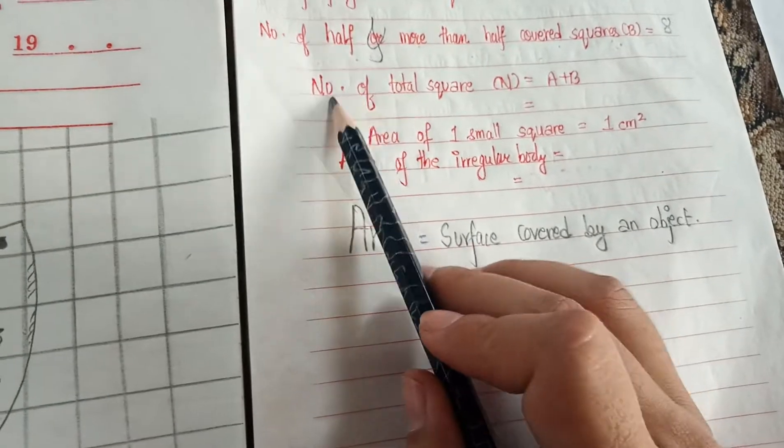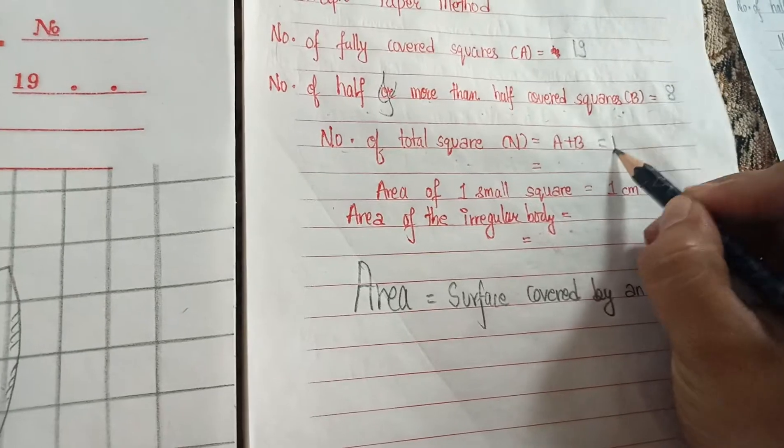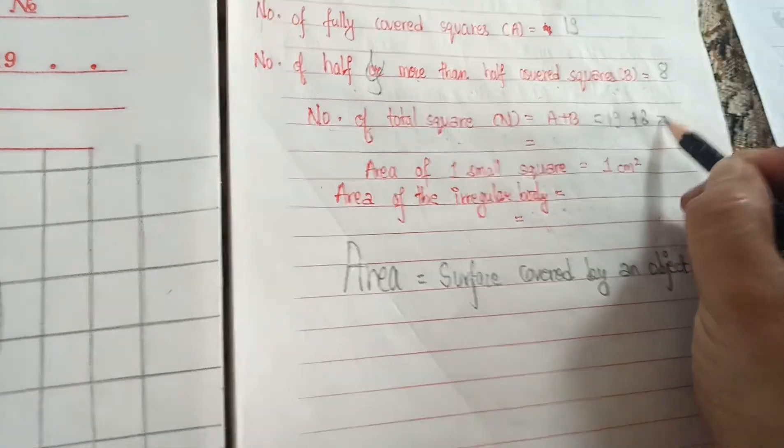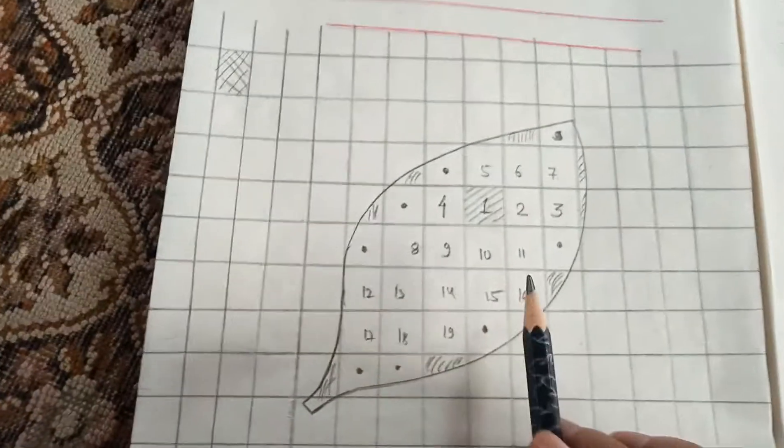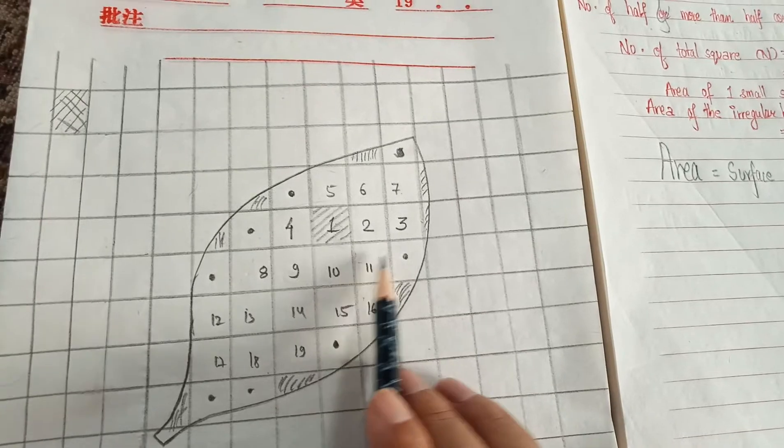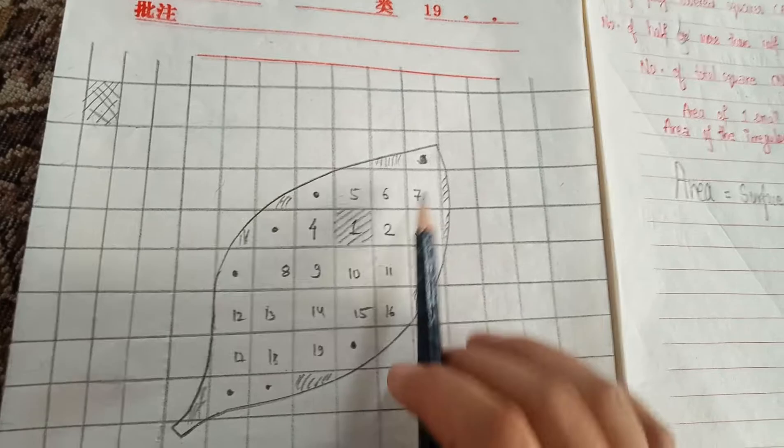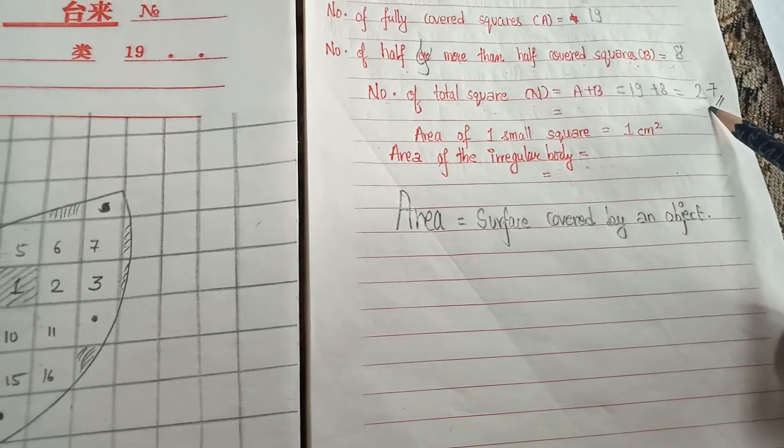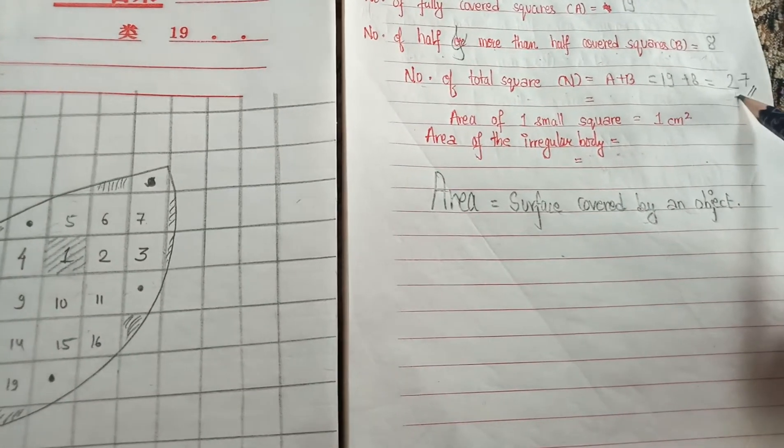The total number of squares, N, equals A plus B: 19 plus 8, which is 27. So 27 squares have been covered, meaning the surface covered by the object. These are covered squares.